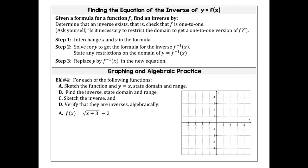We know that x has to be greater than or equal to negative three. If it's not, then what ends up being underneath the radical is a negative. And you're not allowed to have a negative under a square root — absolutely not. So for this function, we know that the domain is x greater than or equal to negative three.